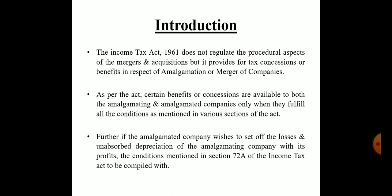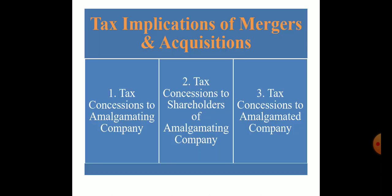Starting with the introduction: the Income Tax Act 1961 does not regulate the procedural aspects of mergers and acquisitions, but it provides tax concessions or benefits in respect of amalgamation or merger of companies. Certain benefits or concessions are available to both amalgamating and amalgamated companies only when they fulfill all the conditions mentioned in various sections of the act. Further, if the amalgamated company wishes to set off losses and unabsorbed depreciation of the amalgamating company with its profit, the conditions mentioned in Section 72A of the Income Tax Act must be complied with.